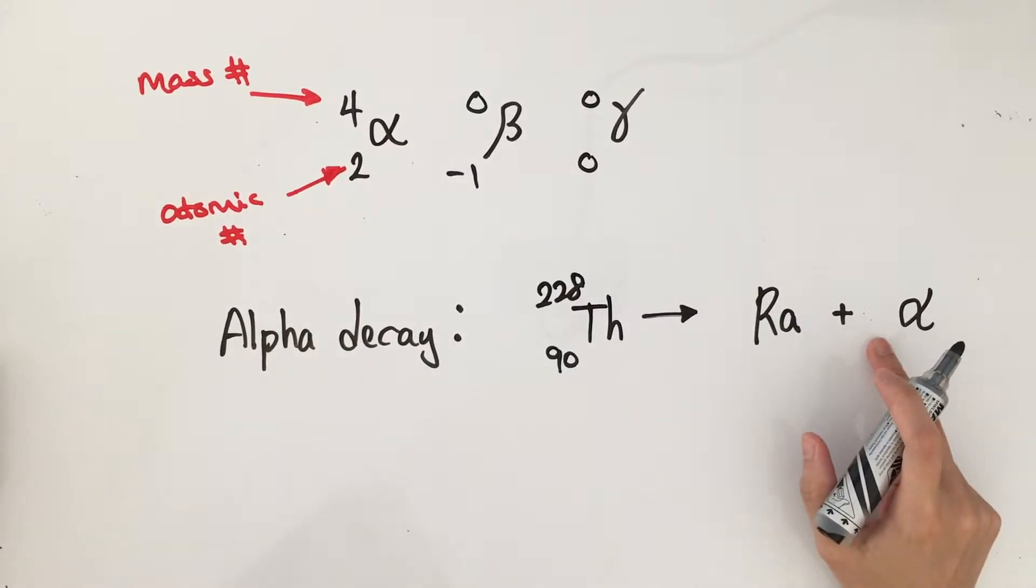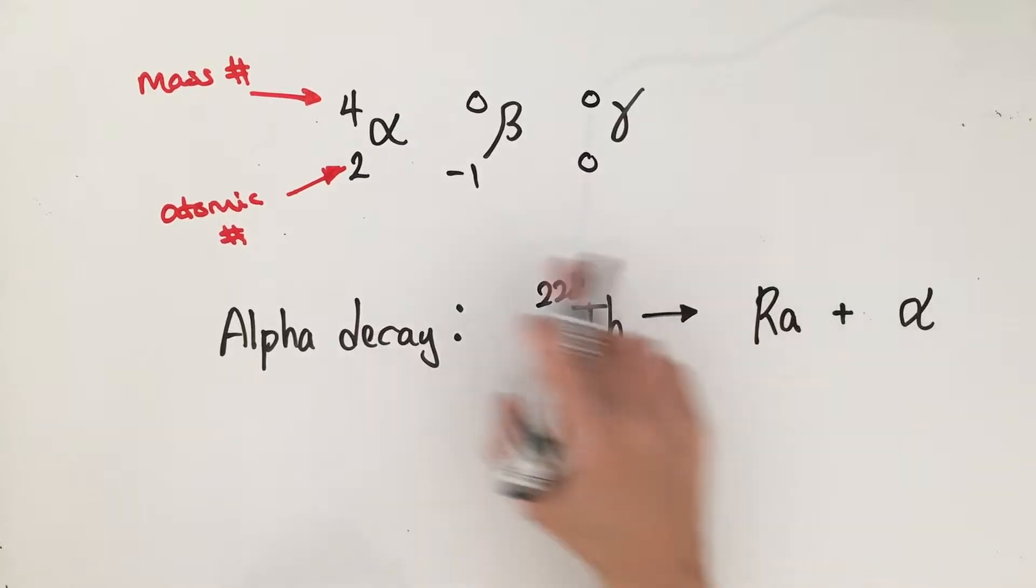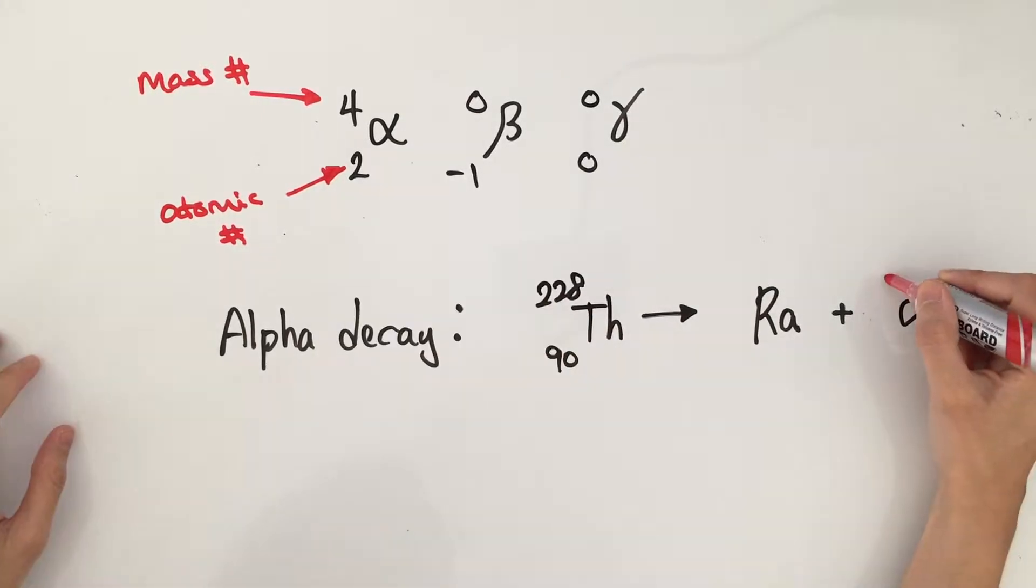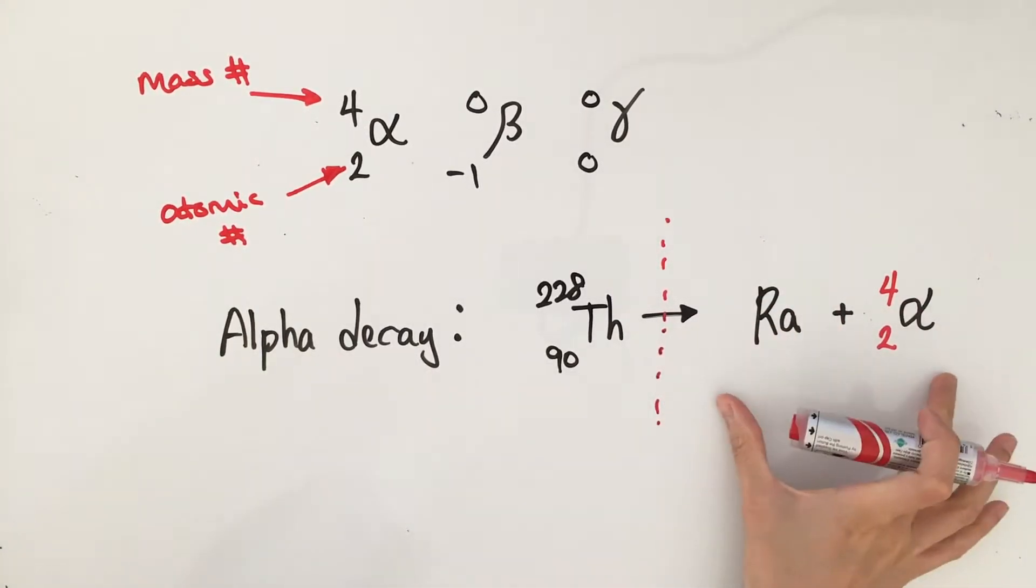The first thing you should complete is the mass number and atomic number for alpha particle, because it's always going to be four and two. Then you can just draw a dotted line down the middle, separating the right-hand side from the left-hand side of the equation.